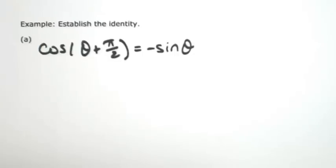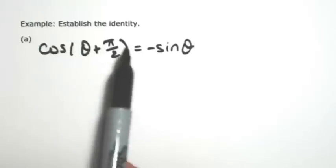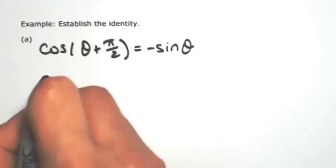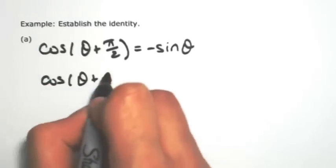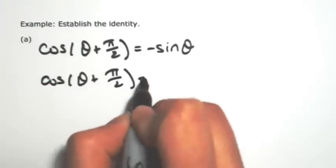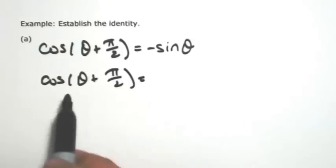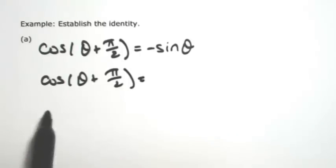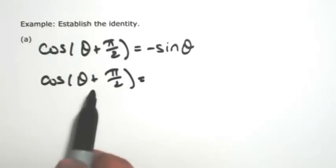So in establishing the identity, I always pick a side that has a little more complexity to it. So the left side has more stuff on it, so I'm going to choose that one. Understanding that theta is an angle, pi over 2 is an angle, we're going to expand this out using the sum formula for cosine.